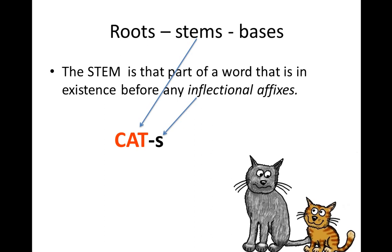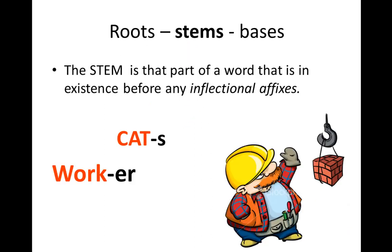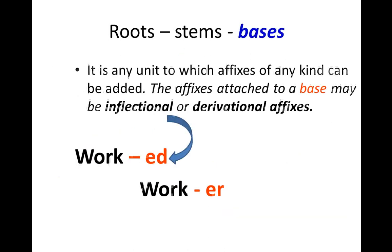So 'root' is also a 'stem' before inflectional affixes. The same applies to 'work' — 'work' is a root and a stem, but when you add '-er' through derivation, it is no longer just a stem. A base is any unit to which affixes of any kind can be added. The affixes attached to a base may be inflectional or derivational — a base is any word prepared to receive any attachment.